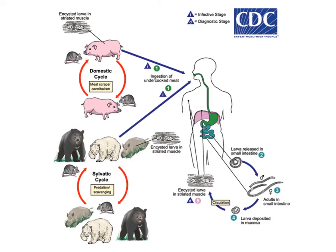As mentioned, badgers and bears can also be invaded, and sometimes even domestic pigs. It happens when a rat or mouse invaded by Trichinella spiralis enters the enclosure of domestic pigs and is eaten. So even domestic pigs must be checked for this dangerous parasite.